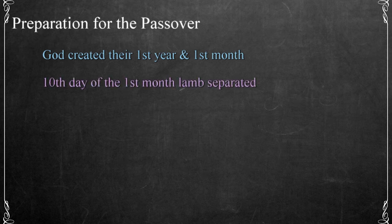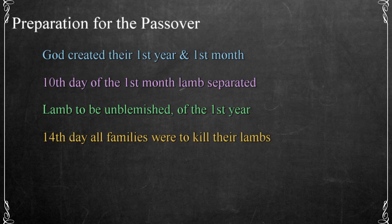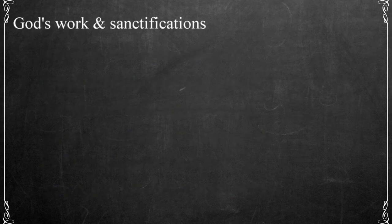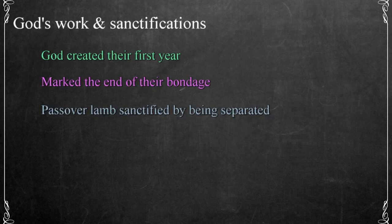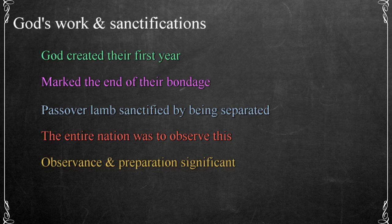On the tenth day of the month, each family was to select a lamb of the sheep or of the goats and separate it from the rest of the flock. The lamb selected was to be without blemish and of the first year. On the fourteenth day at evening, all of the Hebrew families were to kill their lambs. If a family was too small for an entire lamb, they could eat it with a neighbor so that nothing would remain until the morning. The Lord created their first year of freedom as they left Egypt, sanctifying a lamb as it was separated from the flock.